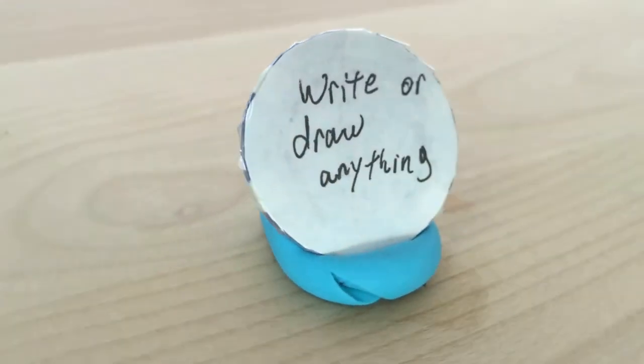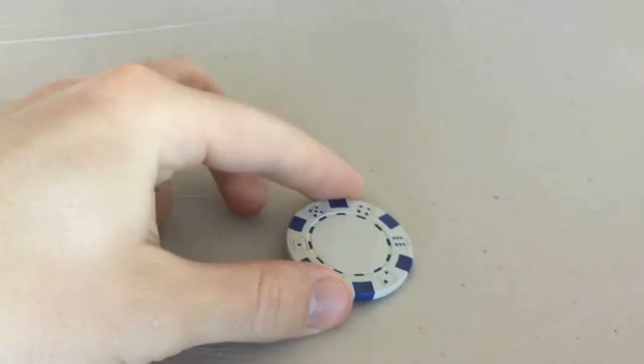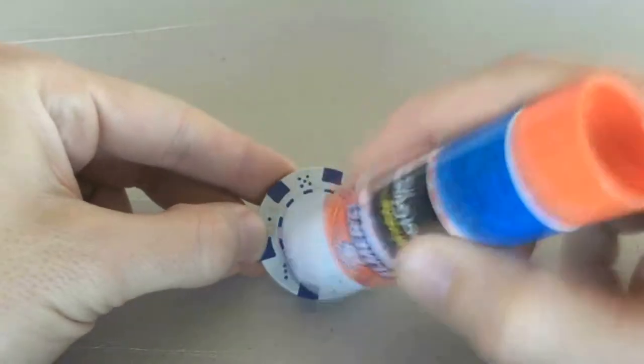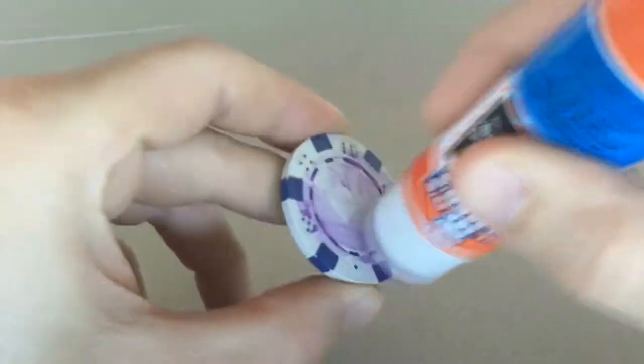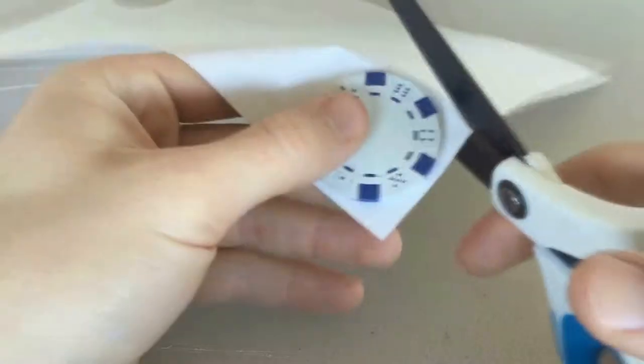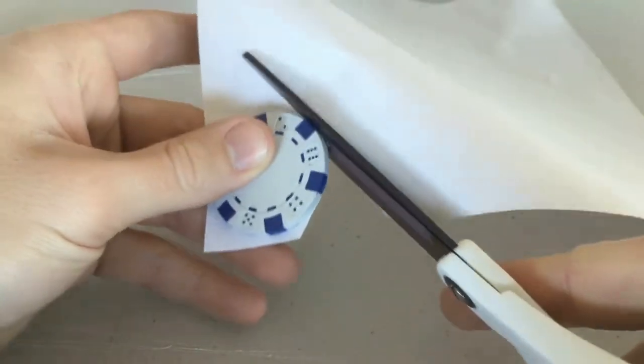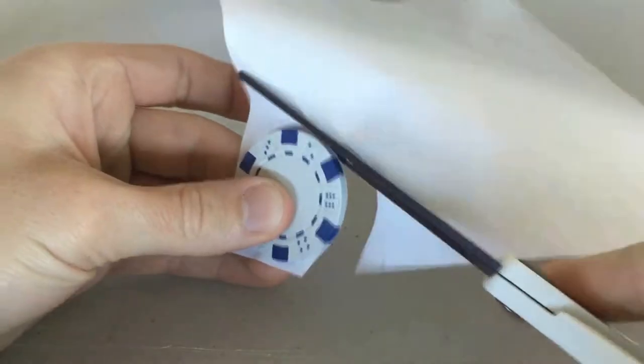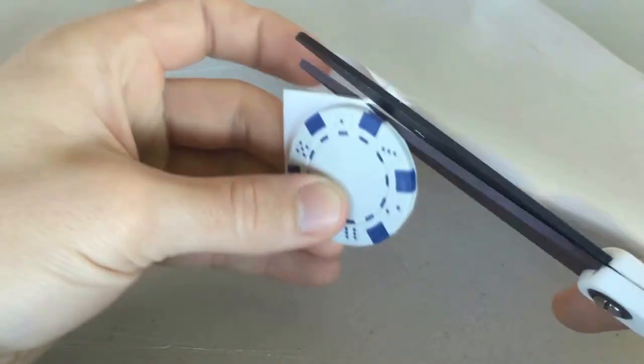Let's start with a coin you can write or draw anything on. So take a poker chip and your glue stick. Apply glue to the back of the poker chip and then press down the poker chip on a piece of paper. Then cut it out. The glue is just to keep the piece of paper on the poker chip long enough for you to draw and then apply tape later.